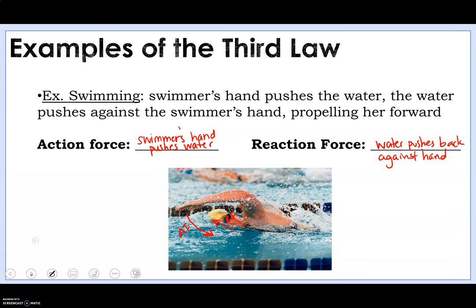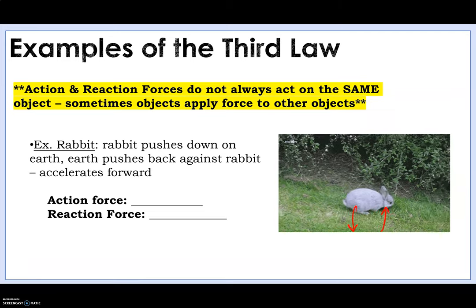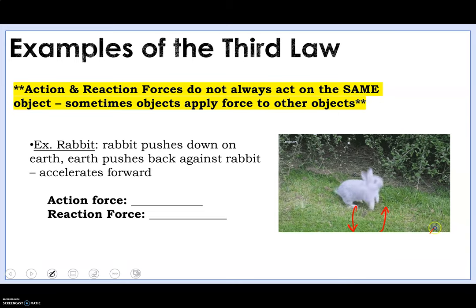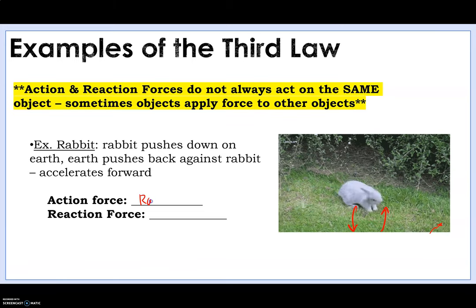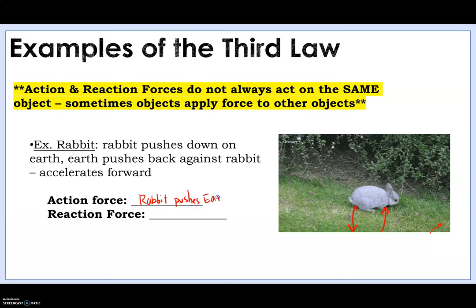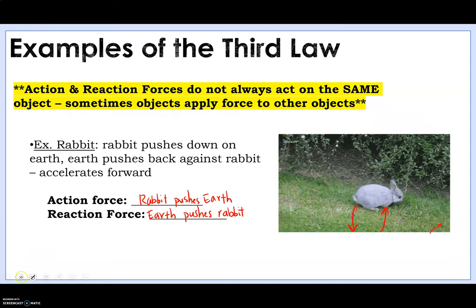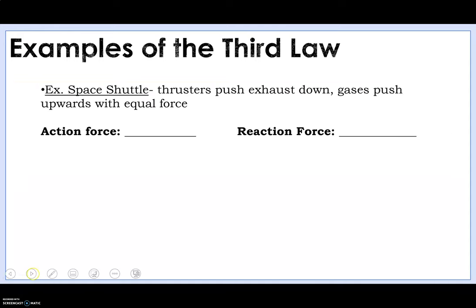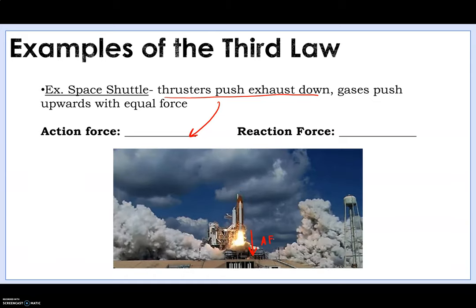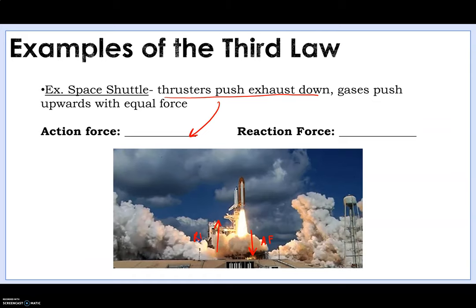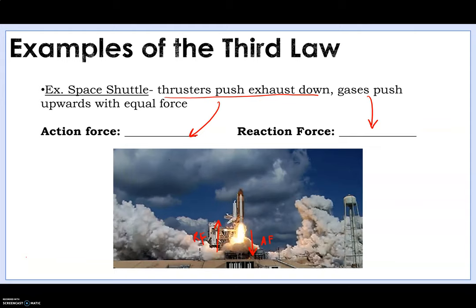So now we're going into that little table on your notes sheet. Here we go. Here's a few examples. Here's a rabbit. The rabbit pushes down on the earth. The earth pushes up against the rabbit. And that is what allows the rabbit to accelerate forward, just like the swimmer, right? We don't see the earth pushing up against the rabbit. But we know that otherwise the rabbit would have just been pulled to the center of the earth. So action force, rabbit pushes earth. Reaction force is that earth pushes rabbit. Another example, we have a space shuttle. The thrusters push exhaust down. That's your action force, right? You're pushing all of these gases down. And then the gases have to push back up with an equal force in order for the rocket to move up into the atmosphere. Again, you can pause this to write down these examples. As long as you have a couple, I'm happy with that.